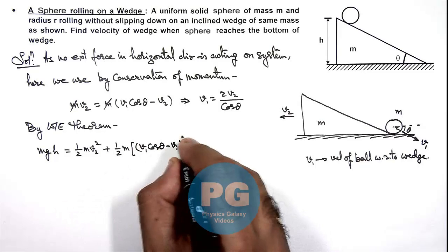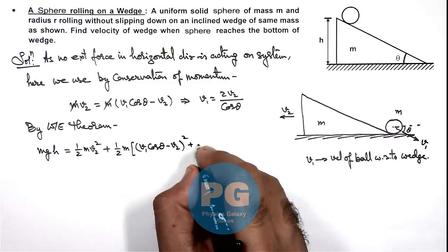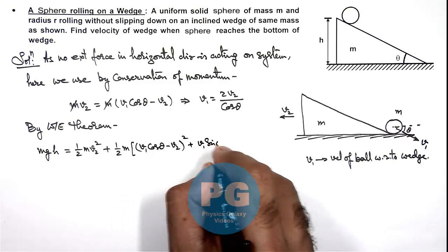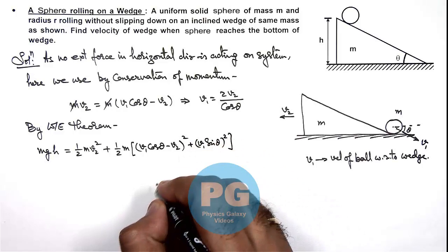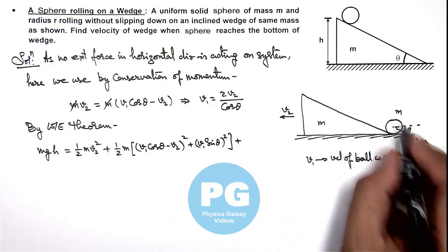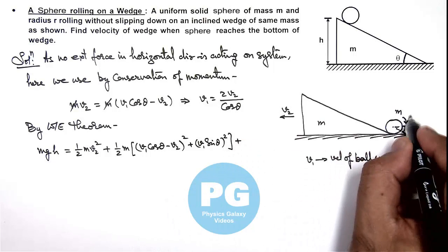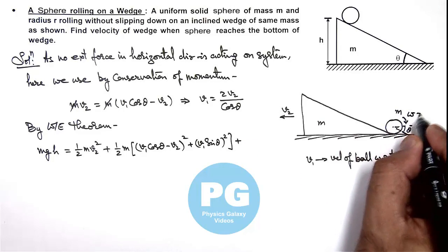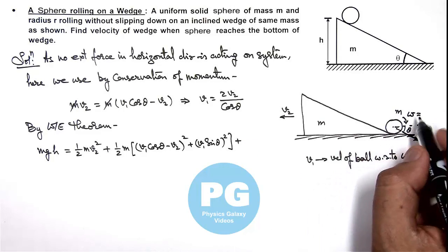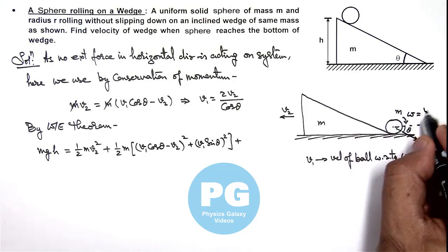whole square, plus (v1 sin θ)², plus the rotational energy attained by the ball as it is rotating at angular speed ω which is with respect to wedge its velocity is v1 divided by its radius.